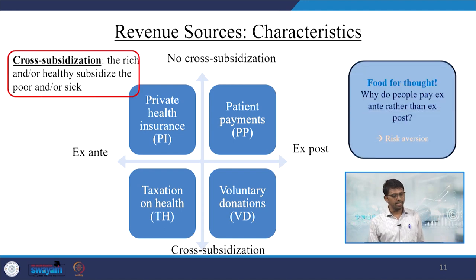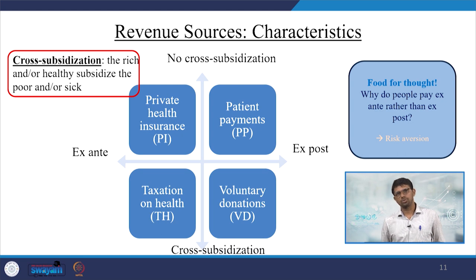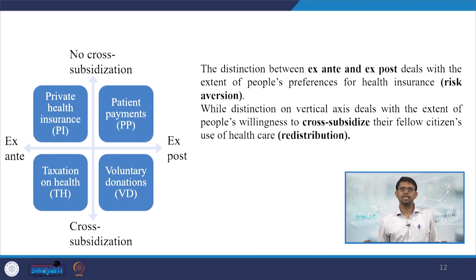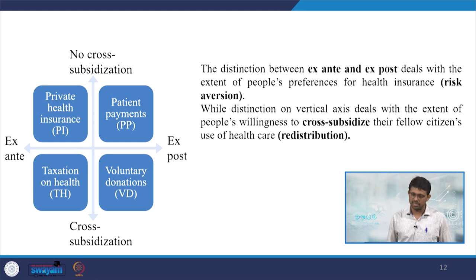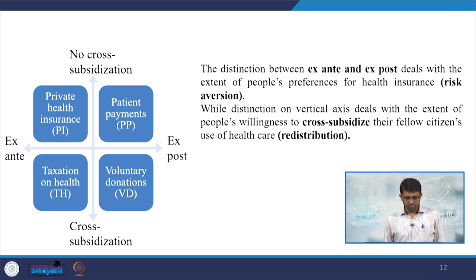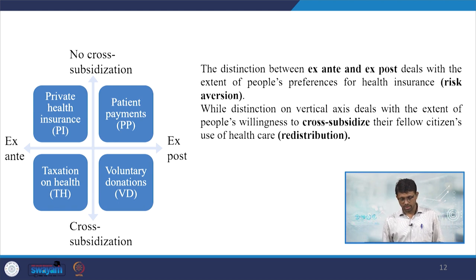In cross-subsidization, the rich or healthy subsidize the poor or sick, creating a link with redistribution of income. People pay ex ante rather than ex post to avoid risk. The distinction between ex ante and ex post deals with people's preferences for health insurance and risk aversion, while the vertical axis deals with willingness to cross-subsidize fellow citizens through redistribution.